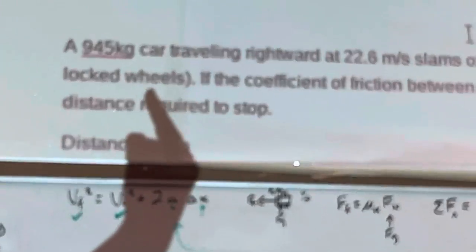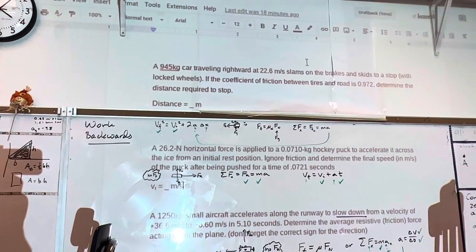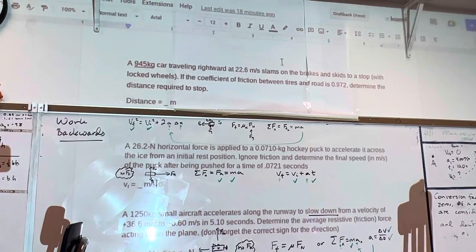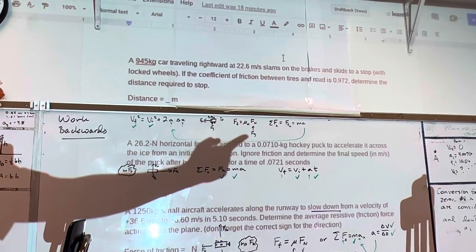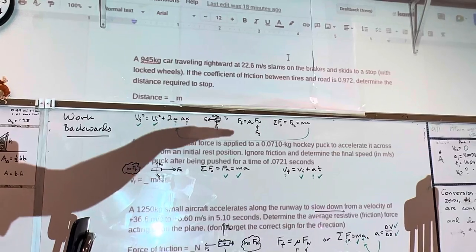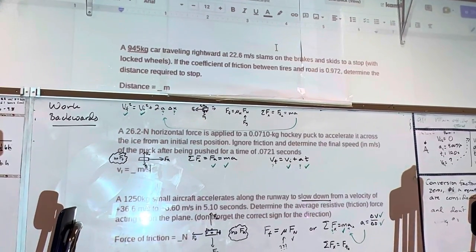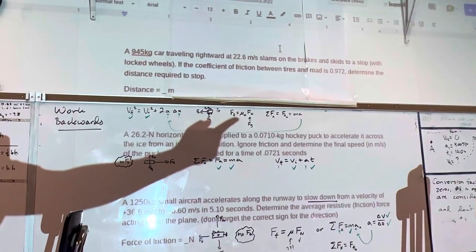Well, we have the mass of the car. Let me zoom out a little bit. We have the mass of the car. And we know the acceleration due to gravity, right? So the normal force and the force of gravity on a flat street are the same. And so that's how we can get that.